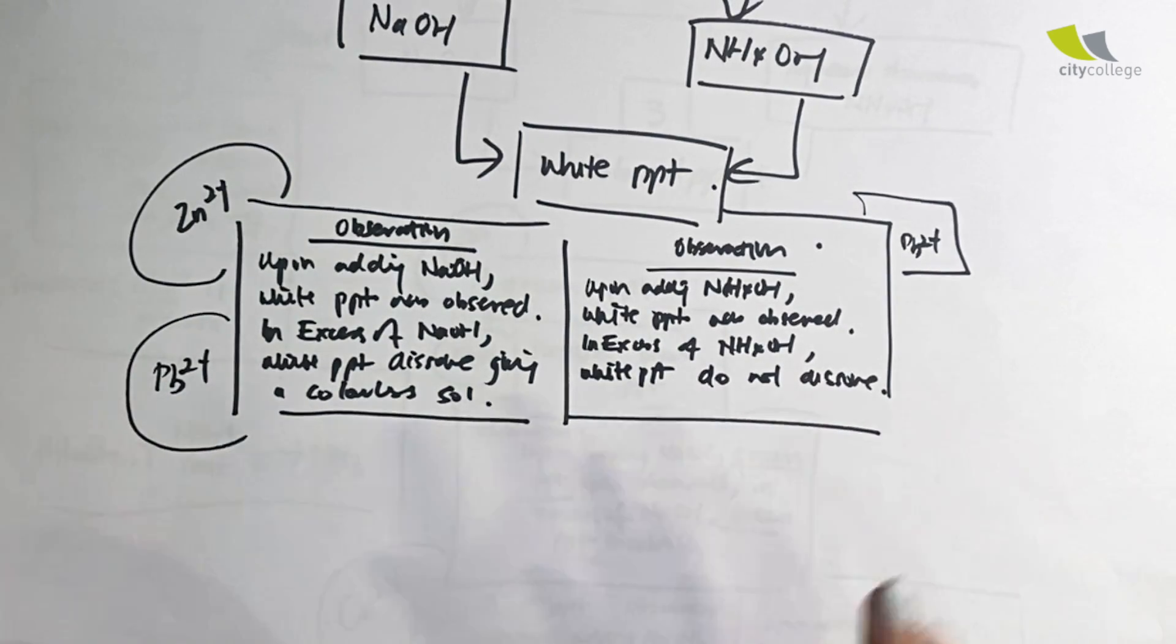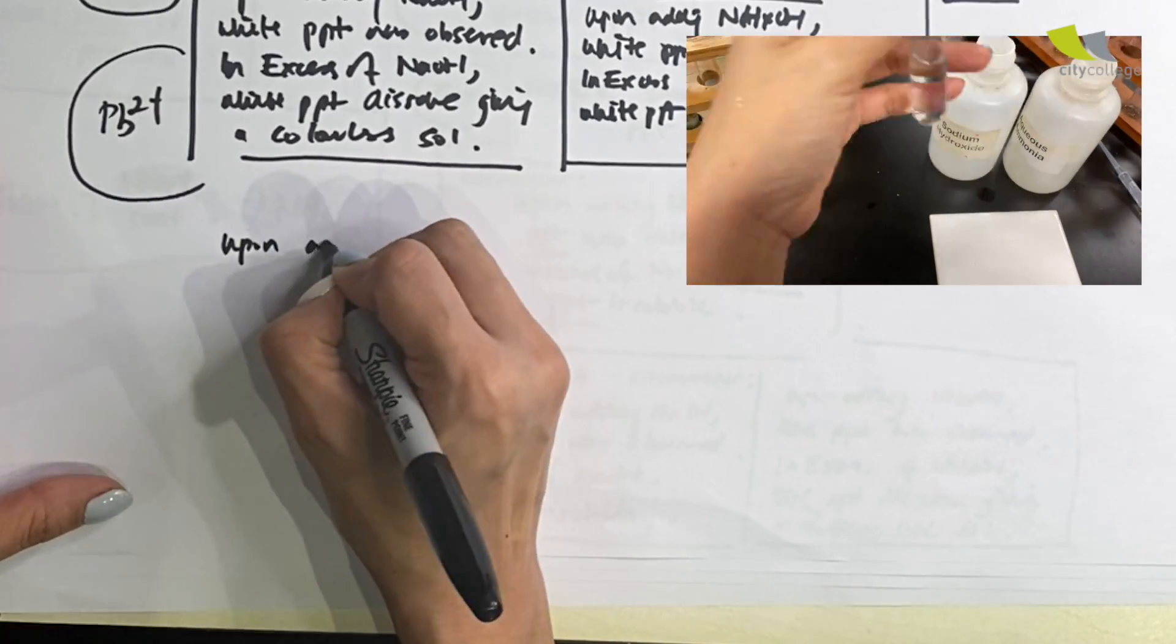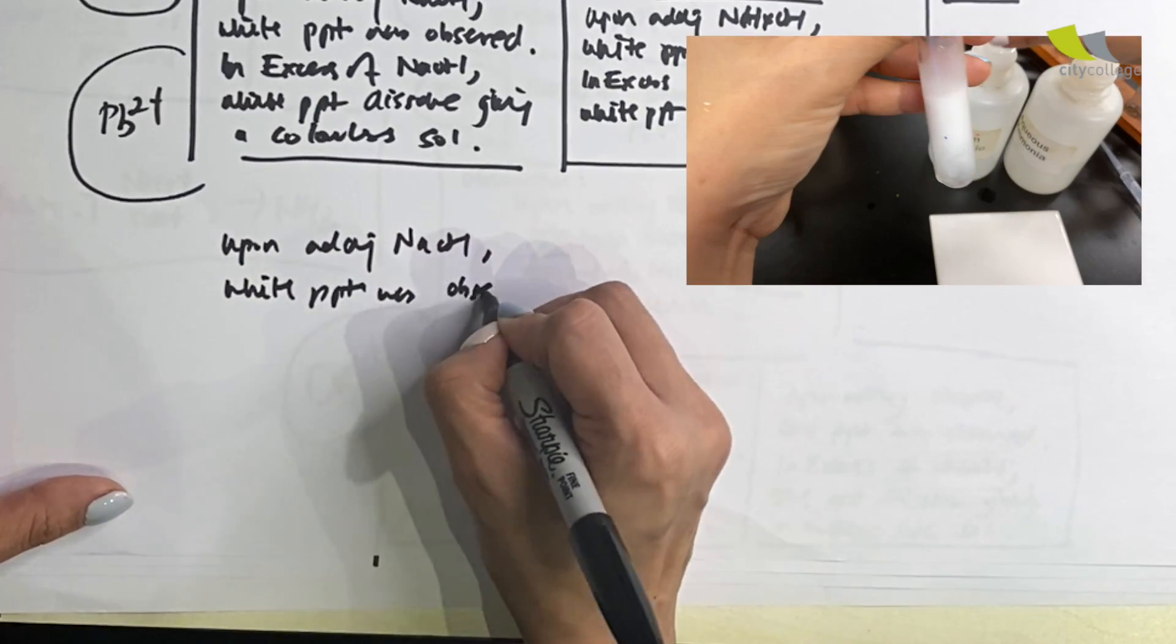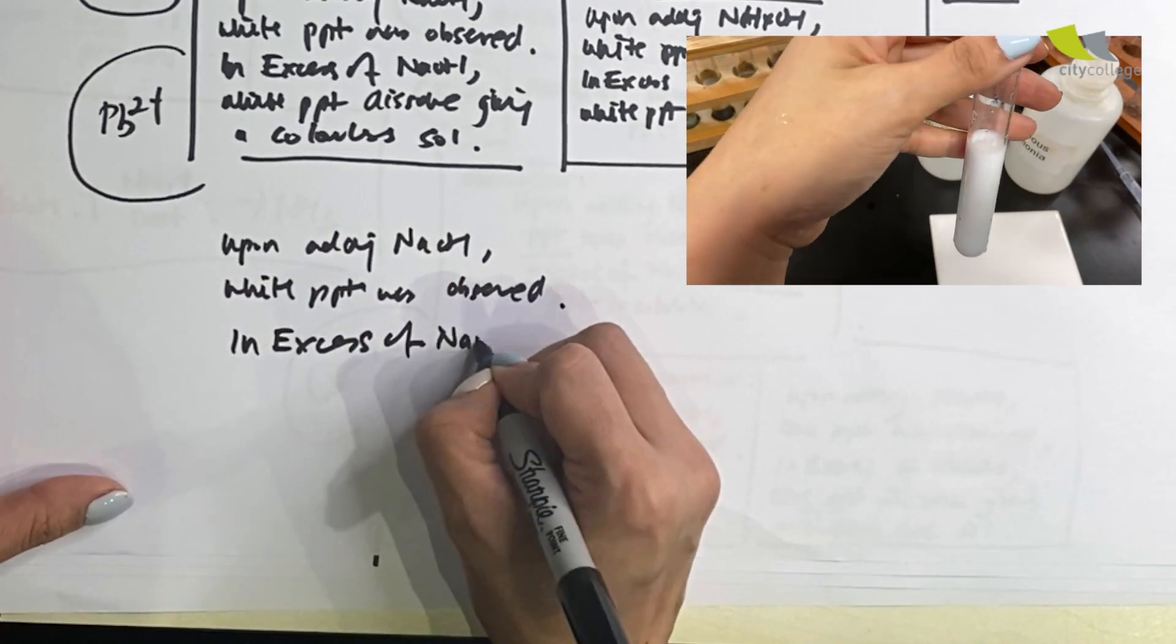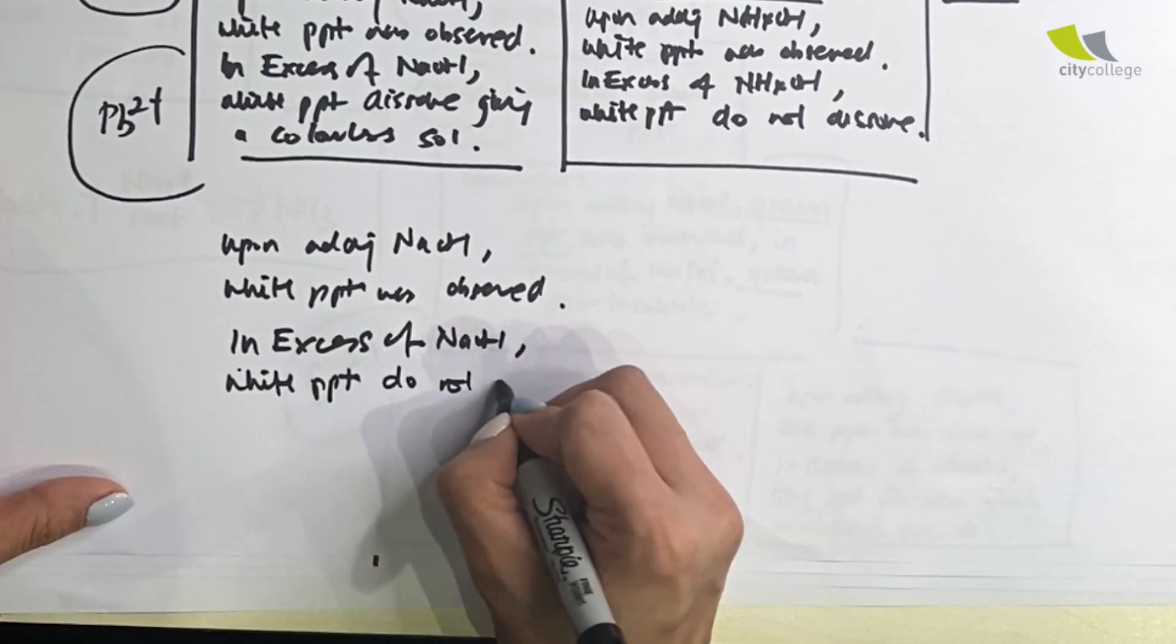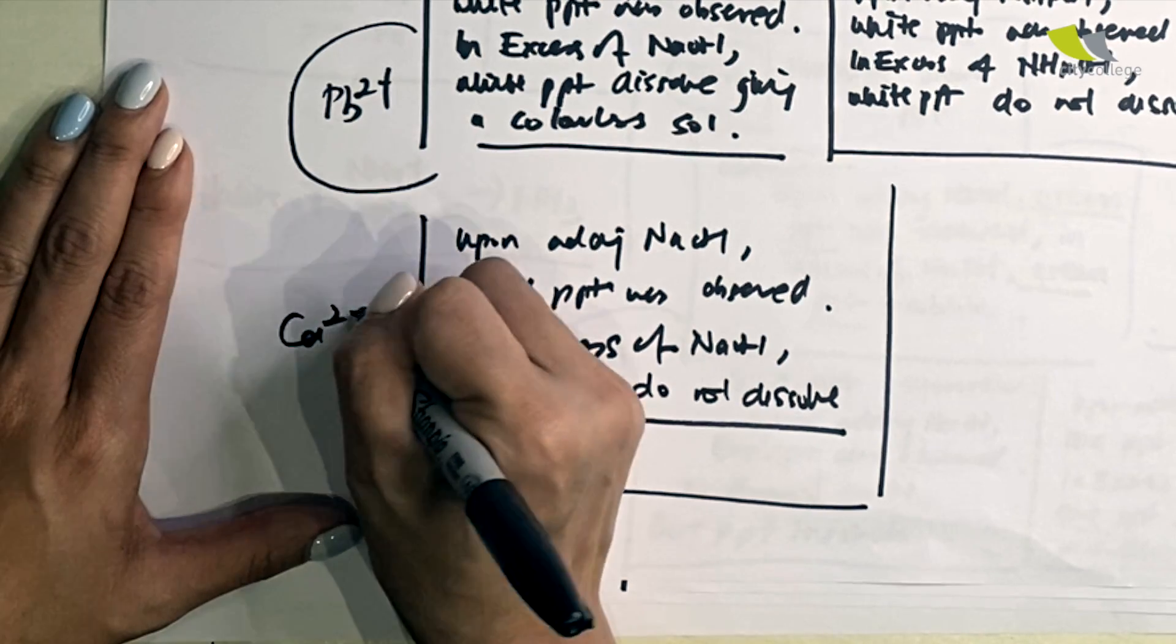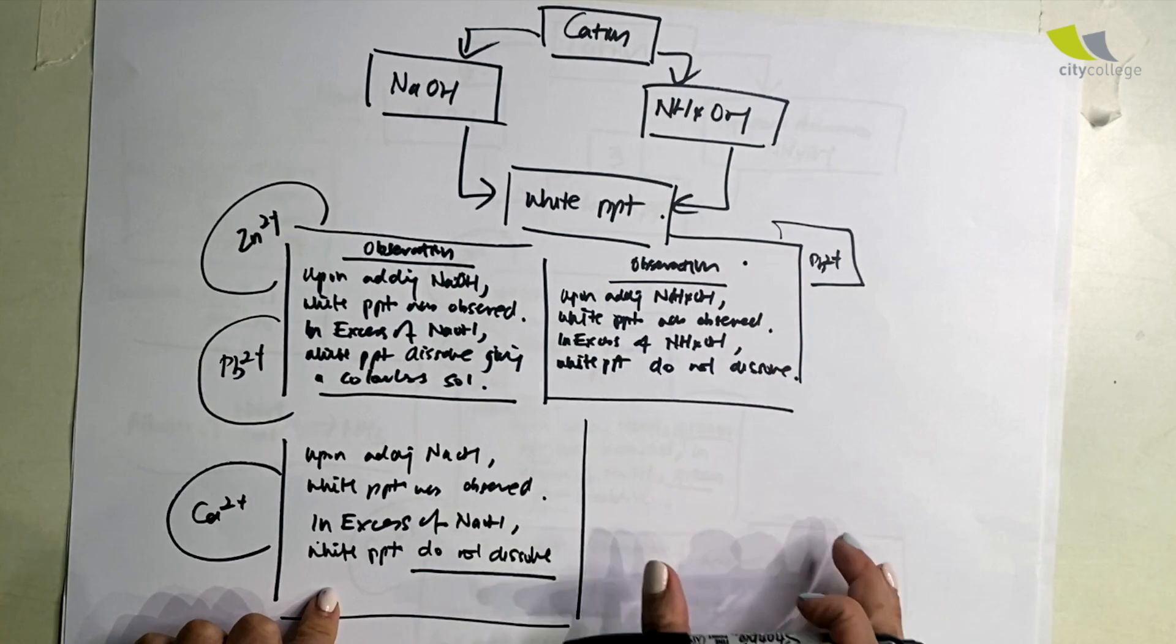Now there's one more that I want to bring in, which is: upon adding NH4OH, white ppt was observed, and in excess of NaOH, white ppt do not dissolve. Yes, the keyword is 'do not dissolve.' And who is this? Well, it's none other than Ca2+, calcium. Now then you will ask, how about calcium's reaction with NH4OH?